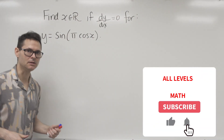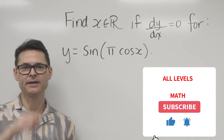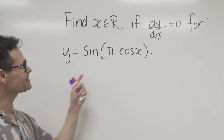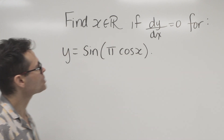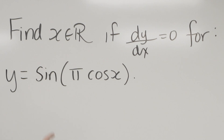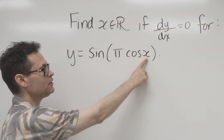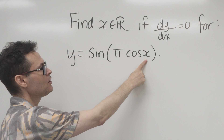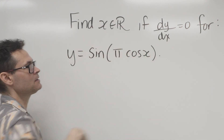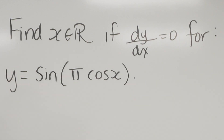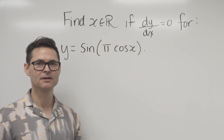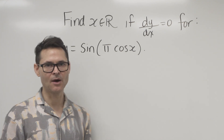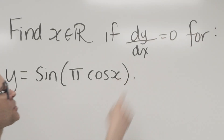Let's do some calculus and trigonometry. This question is going to test your calculus skills — dy/dx — and also your trigonometry skills. What it's asking for is any values of x for which the derivative is equal to zero. It's a customary sort of question in calculus, except that we have a general solution involving trigonometry.